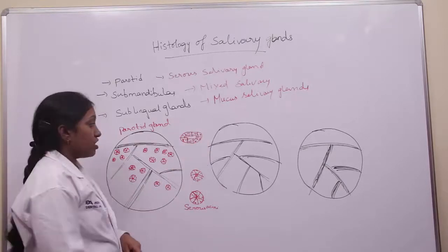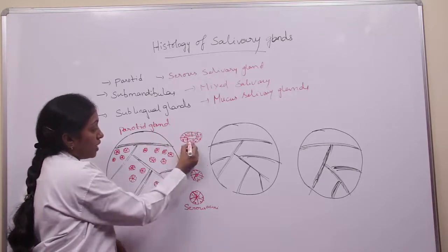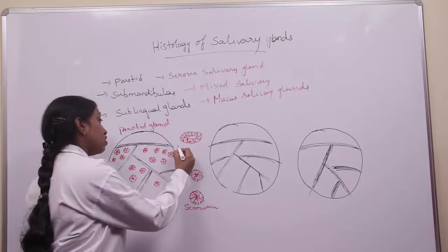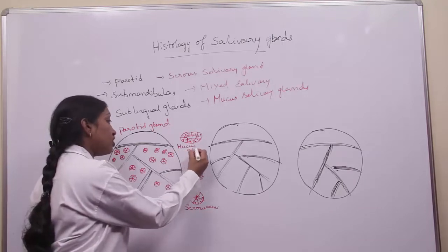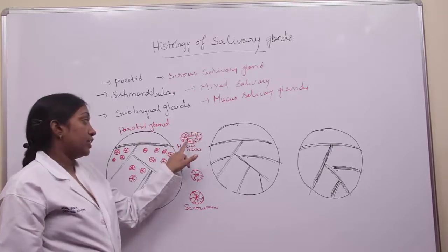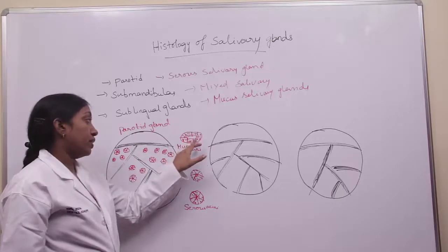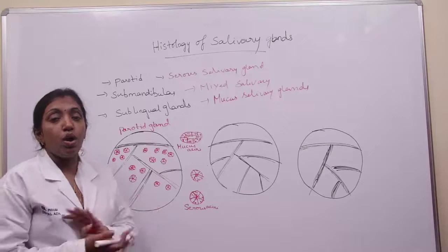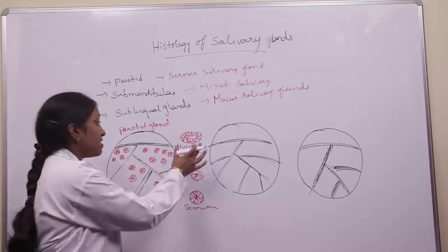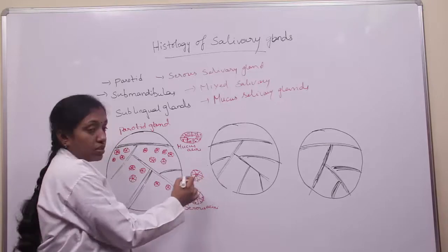Because of the mucus granules, the nucleus undergoes flattening and is situated at the base of the cell. The mucous acini consists of large lumen, cells are cuboidal in shape, the nucleus is flattened and situated at the base because of the accumulation of mucus in the upper part of the cell — that's why the nucleus is thrown to one side.